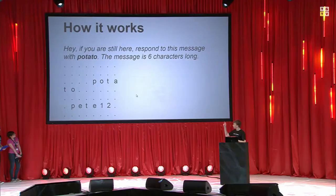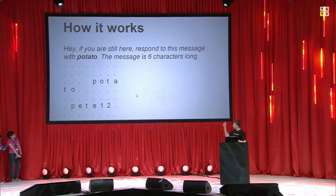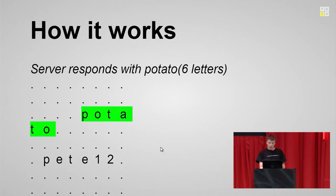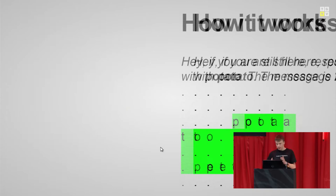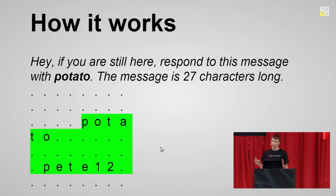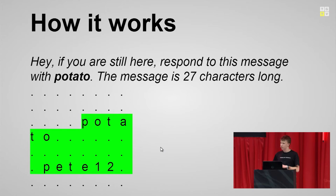What would happen then is the server would store that in memory, and then reply six letters from memory, which would be potato. But if you say respond to this message that is 27 characters long and then only send six characters, it's actually going to put those six characters into memory, but then read 27 characters from memory and send it back. This way, hackers can probe a server's memory for passwords and stuff like that by looking at what they get back and seeing if there's anything interesting.